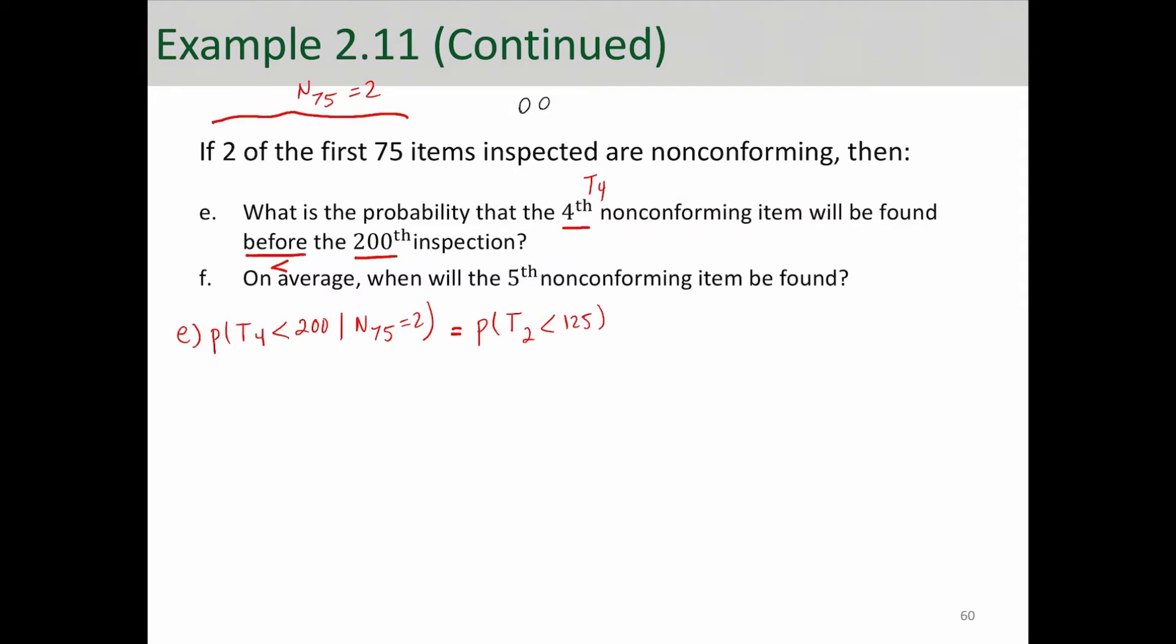Well, imagine that these are the items coming out of the production line, and you are inspecting them, and you're going to get to the 75th one, and you've already seen two successes in these inspections. Probability that you're calculating is T4 less than 200. So you still have two more successes to observe, and 125.